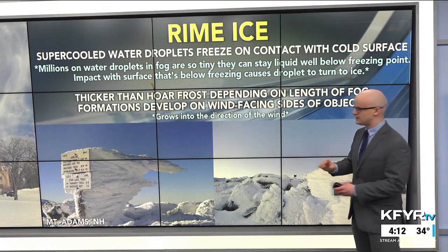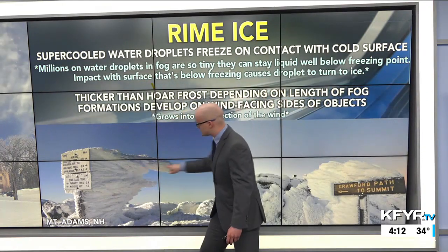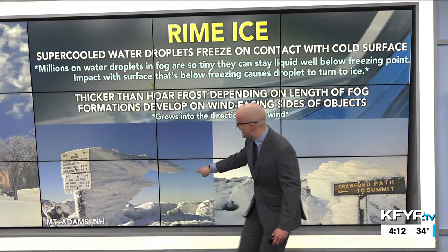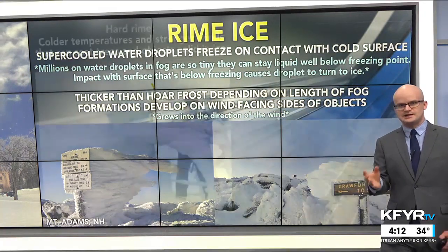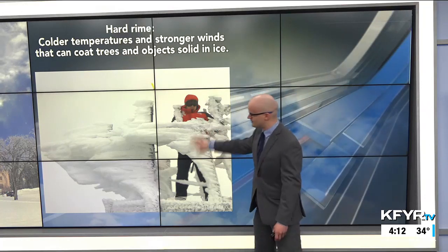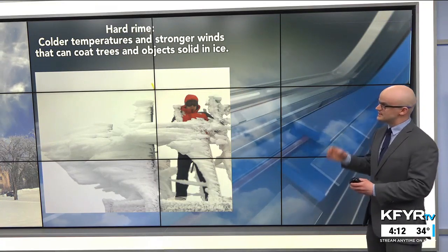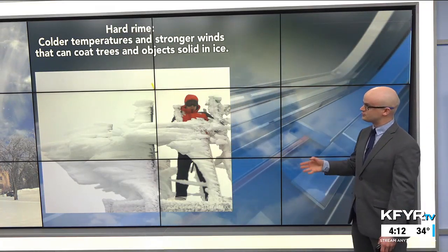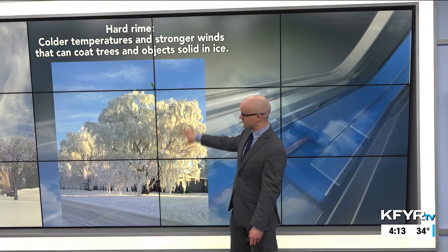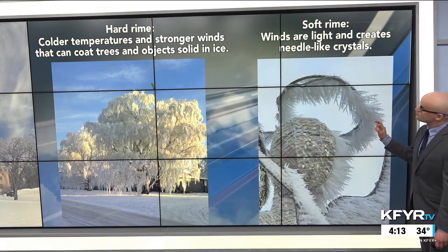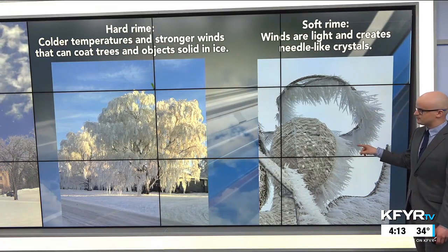The formations develop on the wind-facing sides of objects and grow in the direction of the wind. These are some extreme cases from New Hampshire — Mount Washington and Mount Adams. Envision the wind blowing in one direction and building the ice up from a sign backwards as more and more water droplets in the fog freeze on contact. On top of Mount Washington, observers need to clear off that rime ice constantly. Hard rime ice forms with colder temperatures and stronger winds, coating trees and objects solid in ice. Soft rime ice, with lighter winds, creates more of a needle-like structure that can be pretty picturesque.